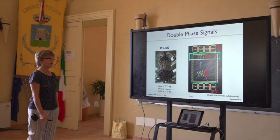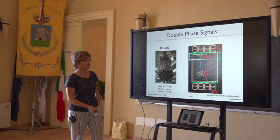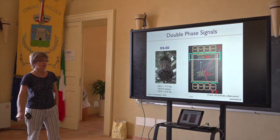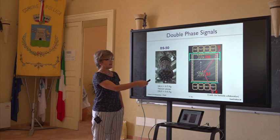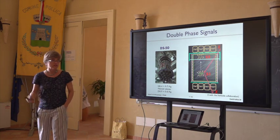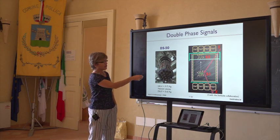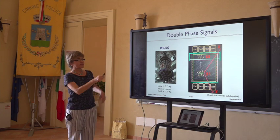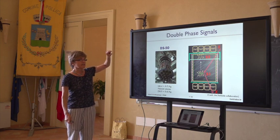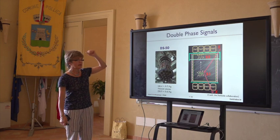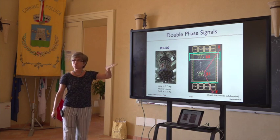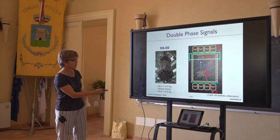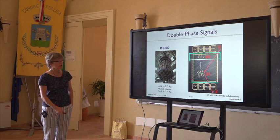Dark matter hits the argon nucleus, producing prompt scintillation light which we call S1. Ionization electrons drift upwards due to the electric field. You can see a picture of DarkSide-50 with the coils for the electric field. When electrons get to a gas pocket on the top, you have electroluminescence, producing the second signal which we call S2. DarkSide-50 had 19 PMTs on top and 19 at the bottom, with a fiducial volume of around 40 kilograms.